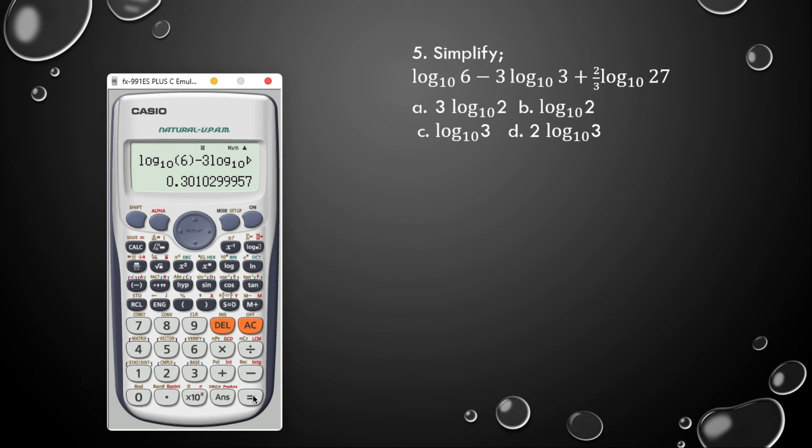So our answer is 0.0102999 in that order, and in the possible answer it is not there. So here we are going to test and see which answer will give us this. So I save this in A, so you press shift, store and A to save your answer.